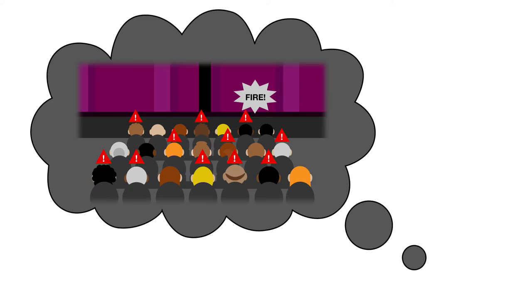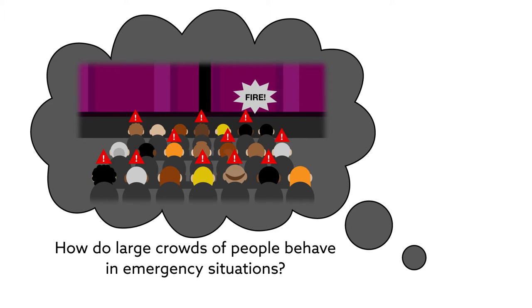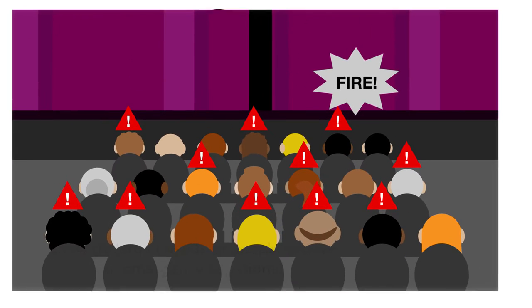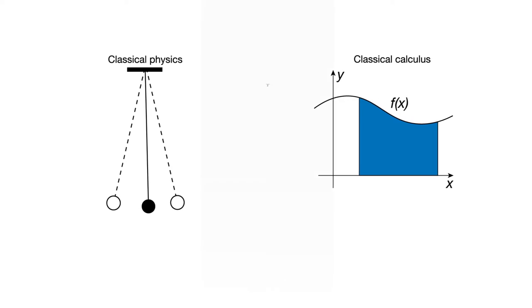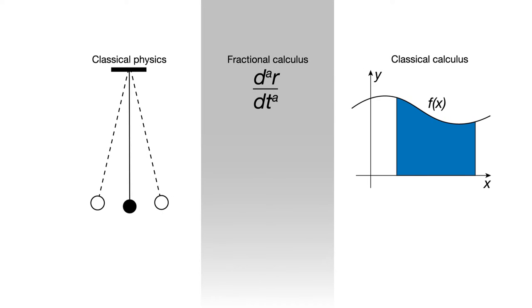But for researchers, the situation also presents an interesting mathematical problem. How do large crowds of people behave in emergency situations? While many have turned to classical physics and calculus for the answer, a recent study shows that a branch of mathematics called fractional calculus may offer a more realistic picture of crowd dynamics.